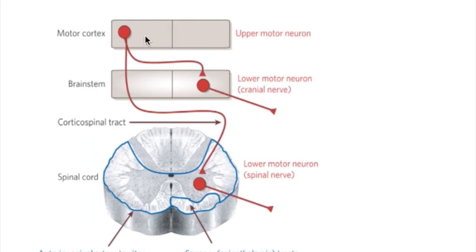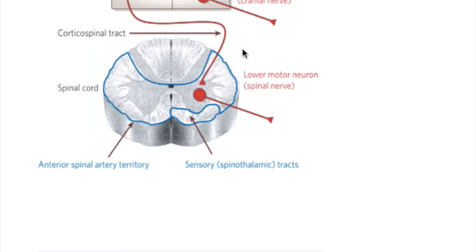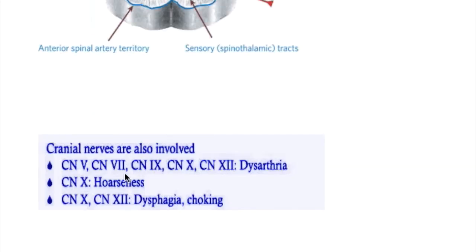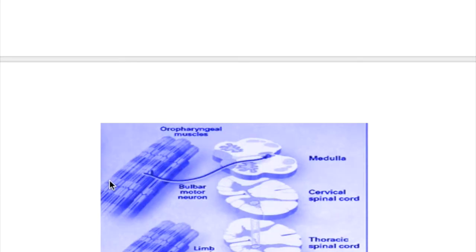Cranial nerve involvement causes lower motor neuron lesions. The cranial nerves involved are cranial nerves 5, 7, 9, 10, and 12, causing dysphagia, dysarthria, dysphonia, and choking. Hoarseness is due to involvement of cranial nerve 10, the vagus. The eye muscles, supplied by cranial nerves 3, 4, and 6, are not involved. In motor neuron disease, bowel and bladder functions are normal until late in the disease.